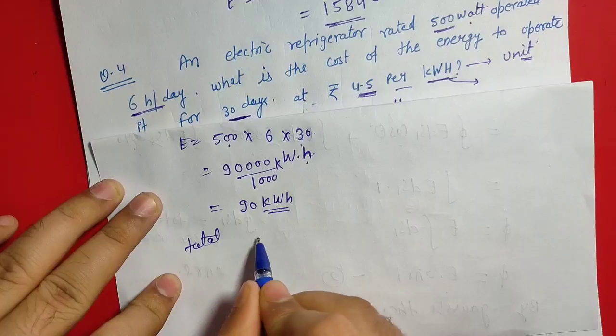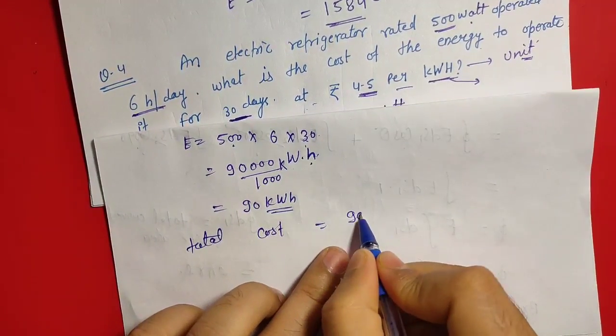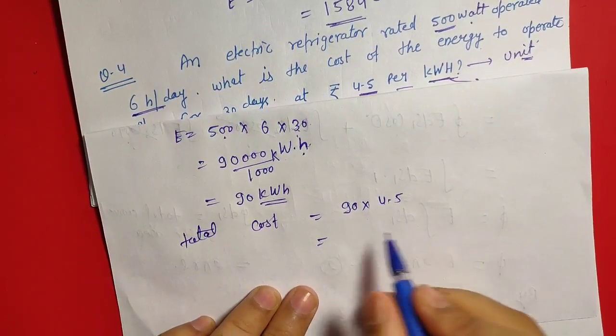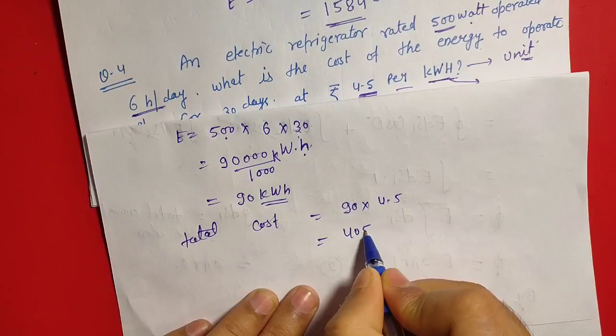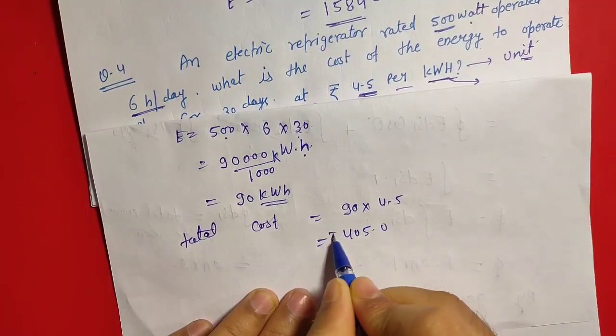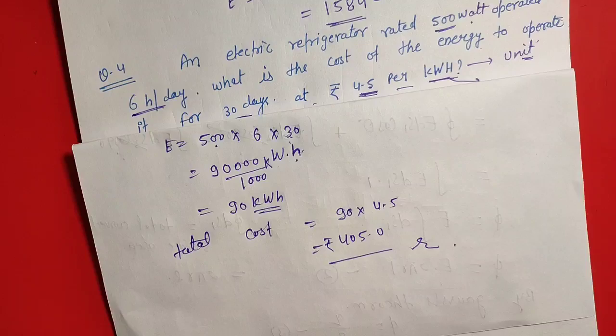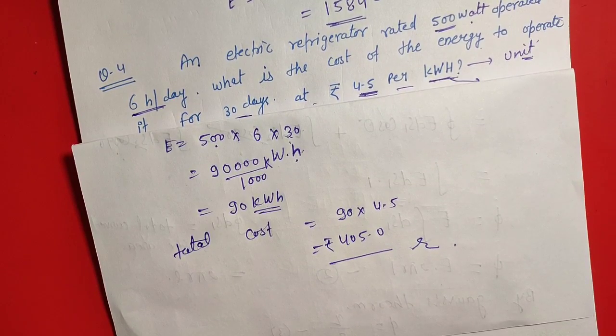To total cost ho jaega 90 into 4.5. 90 into 4.5 multiply karenge. Iss jagah aapka 405.0 rupees. Matlab total 30 days ka jo electricity cost hoga, aapka 405 rupees. Is it clear?